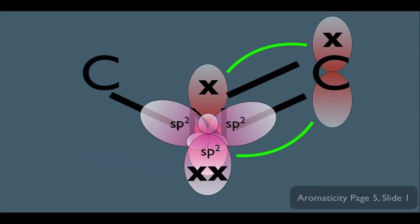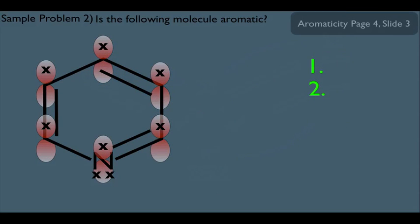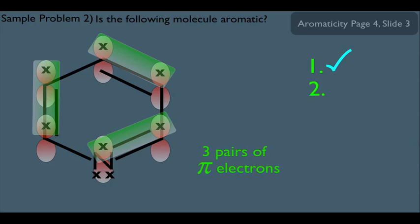Notice carefully — what counts as a pi electron here? We wouldn't count the lone pair electrons in the sp2 orbital. However, the electron in the p orbital we would count as a pi electron. Going back to our structure, we can clearly see we have that uninterrupted cloud of pi electrons, so the first criterion is met. For the second criterion: one pair of pi electrons, a second pair, and a third pair. This molecule has three pairs of pi electrons, so the second criterion is met — this molecule is definitely aromatic.